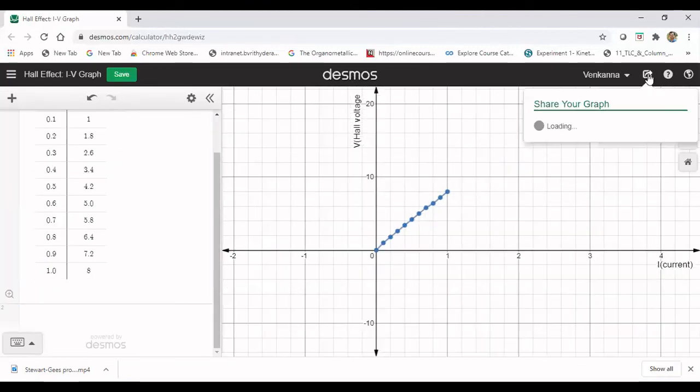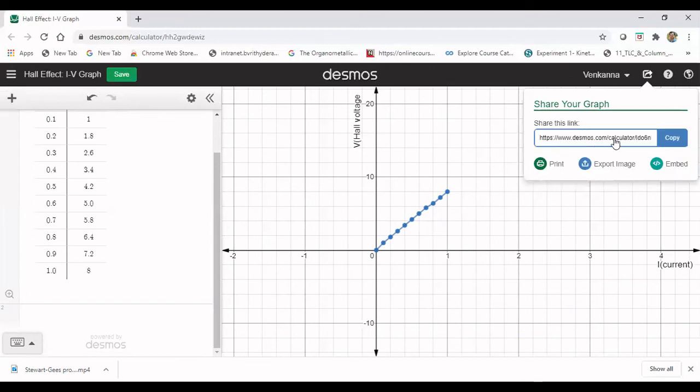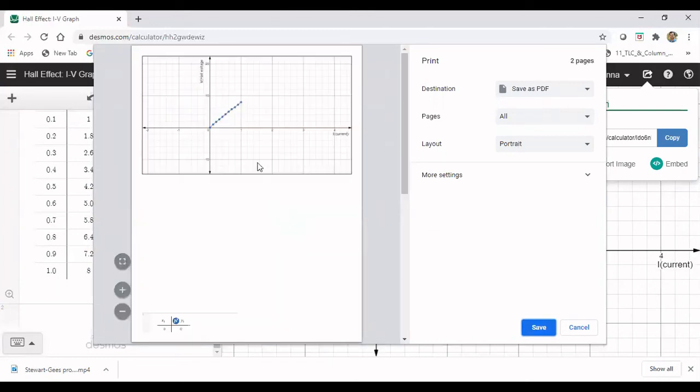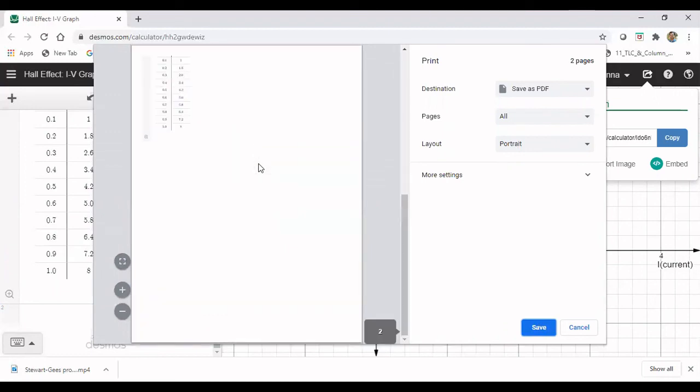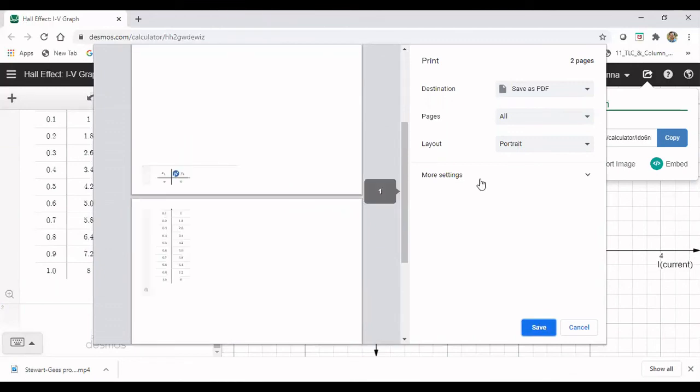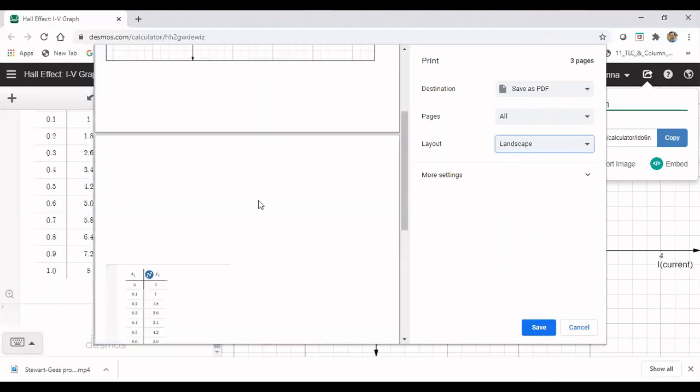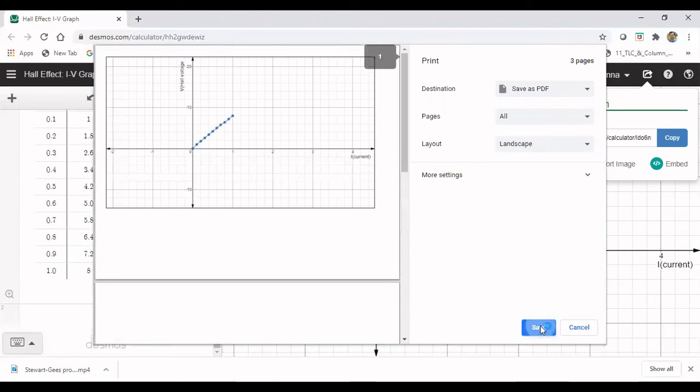Go to share, go to the option print and save PDF. We will get data as well as graph. Save it.